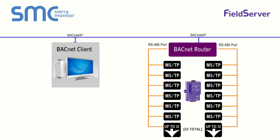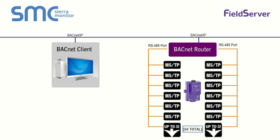Two RS-485 ports allow up to 64 nodes to be connected to the BACnet router. With two RS-485 ports, the refresh rate is halved compared to a router with a single RS-485 port.